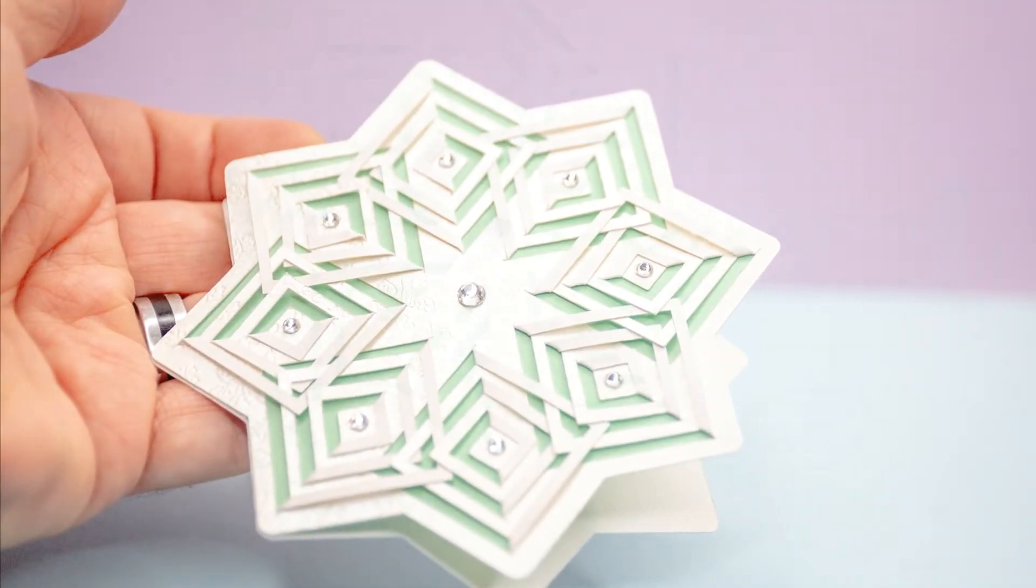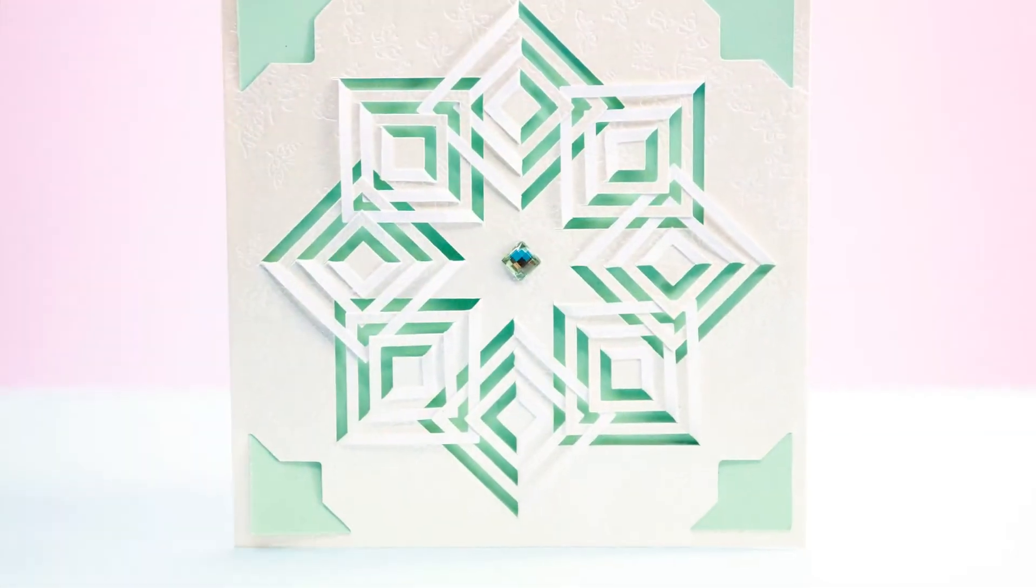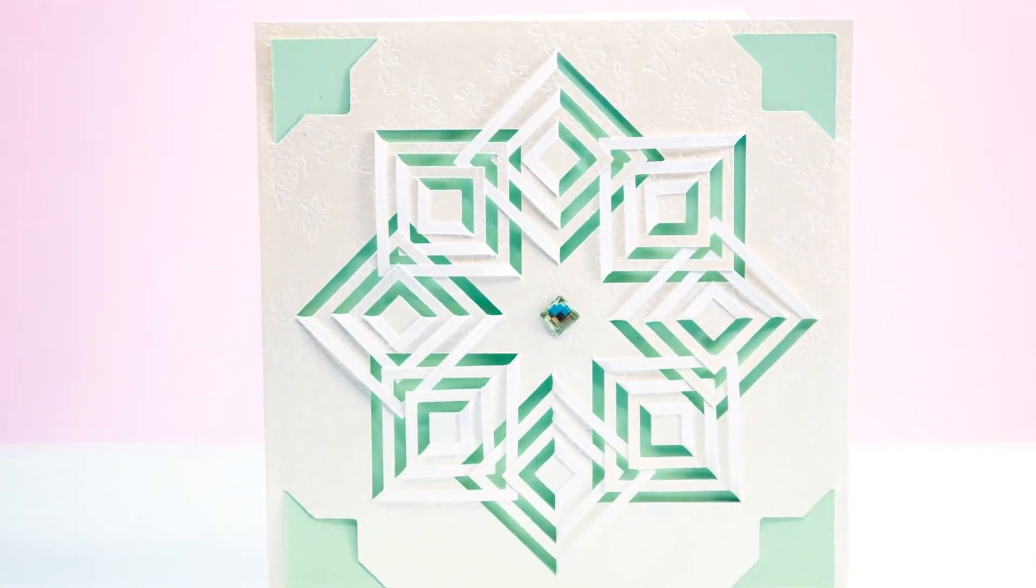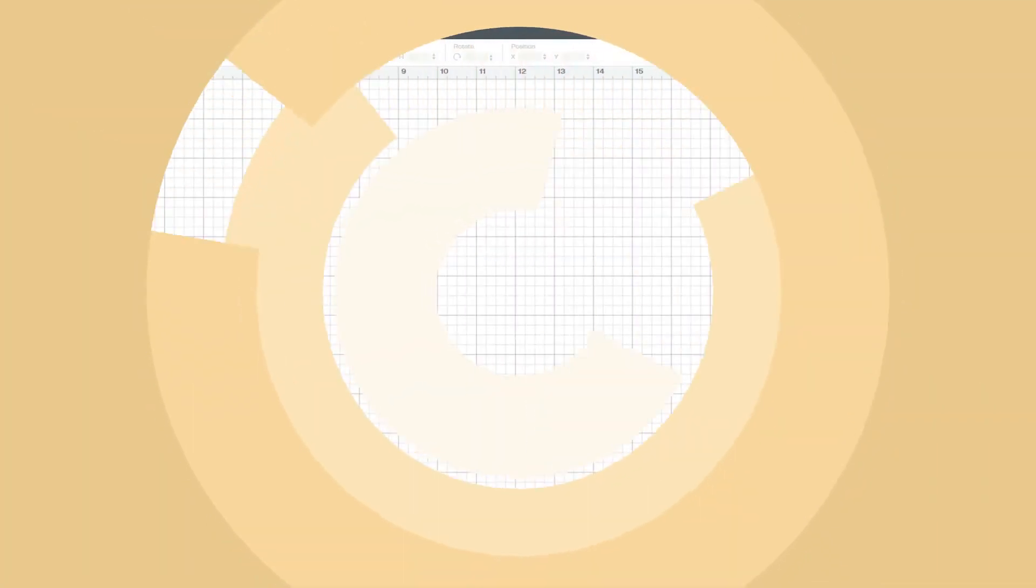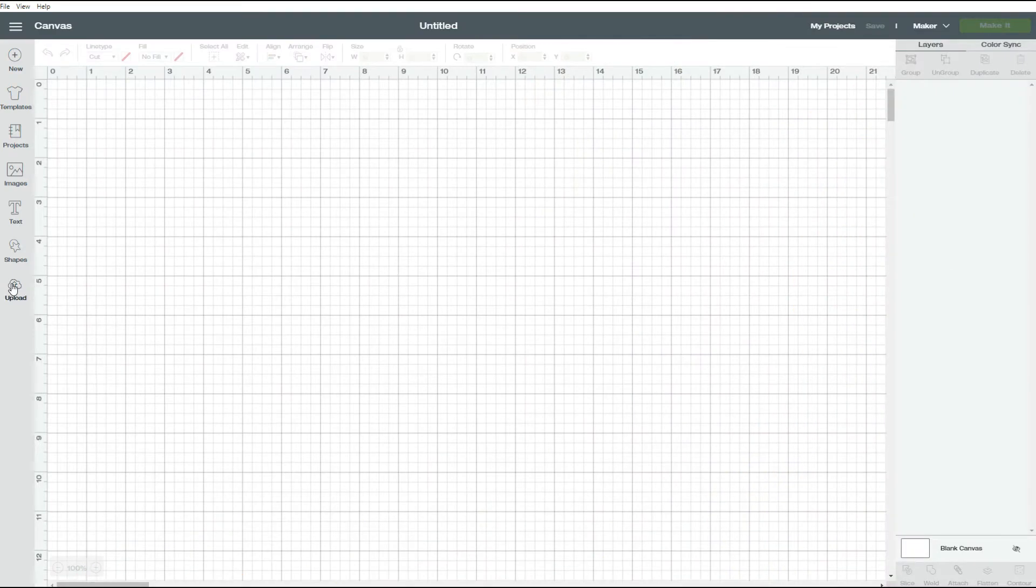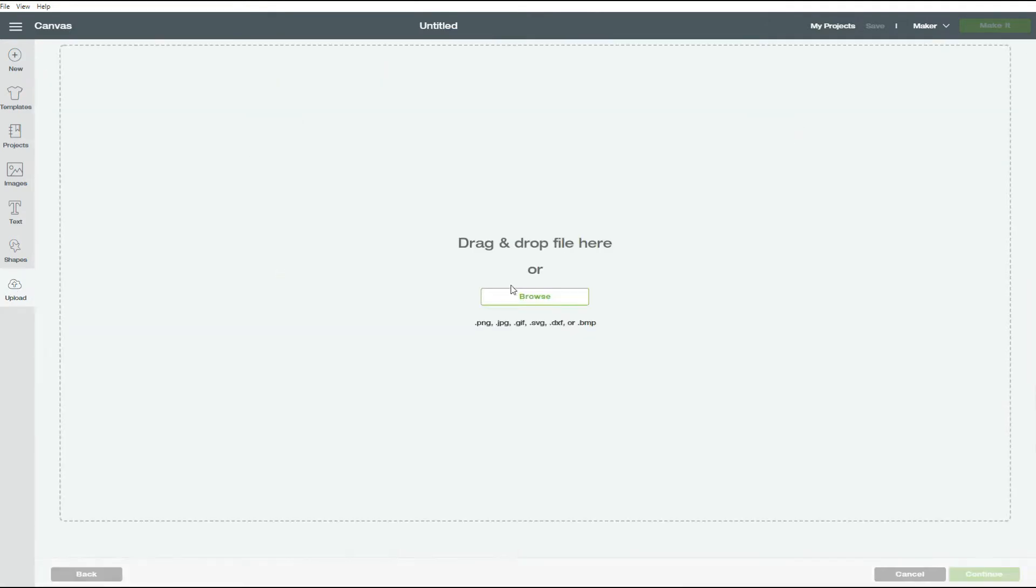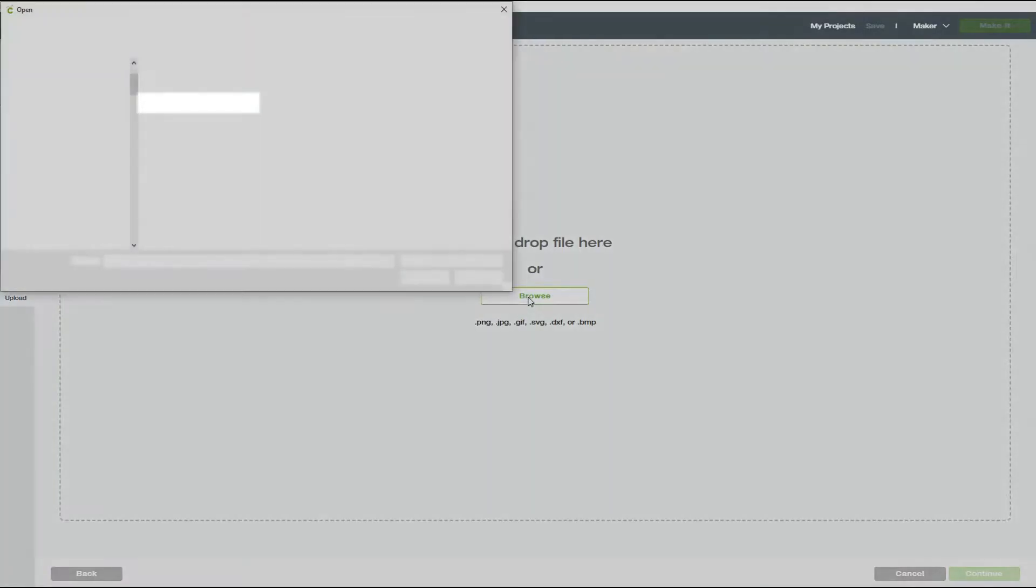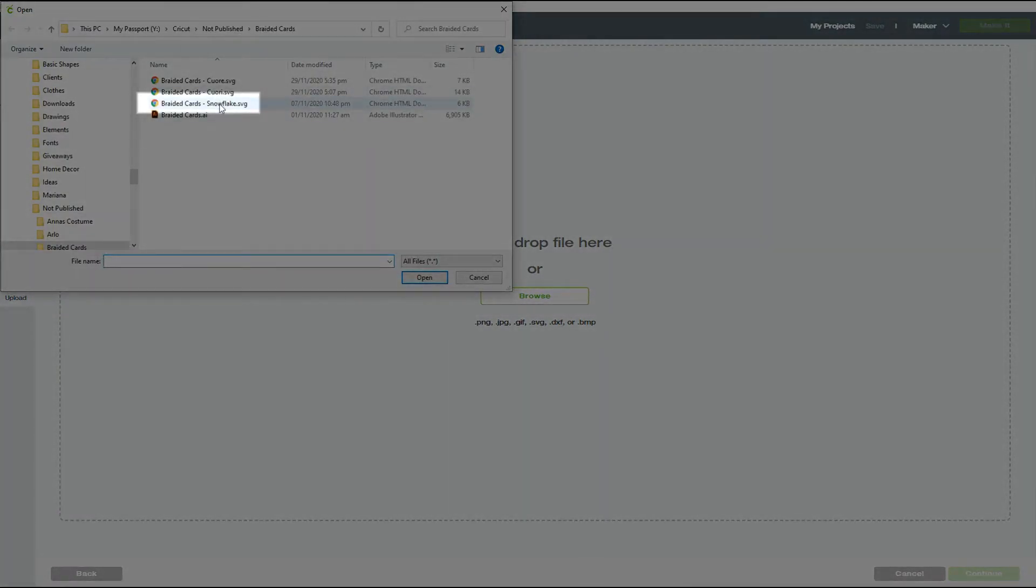First, I'll show you how to prepare your file, upload it and prepare it to be cut on Cricut Design Space. The first thing we're going to do is upload our file. Click on upload, then go to upload image and then click on browse. Navigate to the folder where your file is stored. This is braided card Snowflake.svg file and click on open.